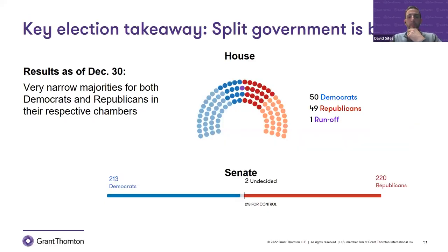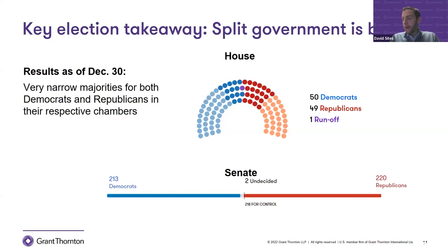The House of Representatives has long been decided and is clearly going to be under Republican control, with Republicans holding around 220 seats. So what we have is split government, and split government is going to impact our ability to get things done.